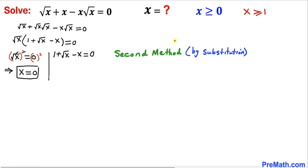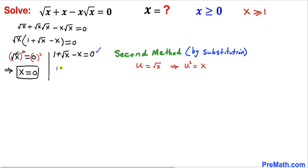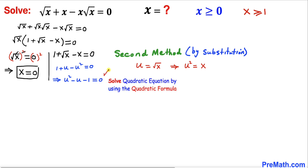Now let me show you the second method using substitution. Let u equal square root of x, so u squared equals x. Substituting into the factored equation 1 plus square root of x minus x equals zero, it becomes 1 plus u minus u squared equals zero. Rearranging, we get u squared minus u minus 1 equals zero. This is a quadratic equation that we will solve using the quadratic formula.